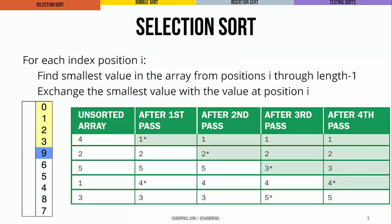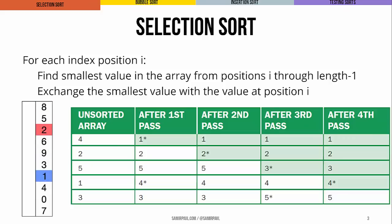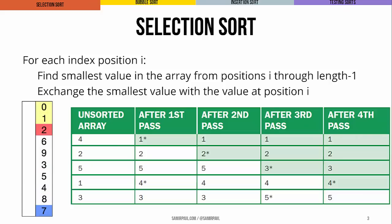The first algorithm we'll talk about is selection sort, and the basic idea is really straightforward. We look through each position i, and for every position, we want to find the smallest value in the array from that position through the end of the array. We take that smallest value that we find and exchange it with the current position.